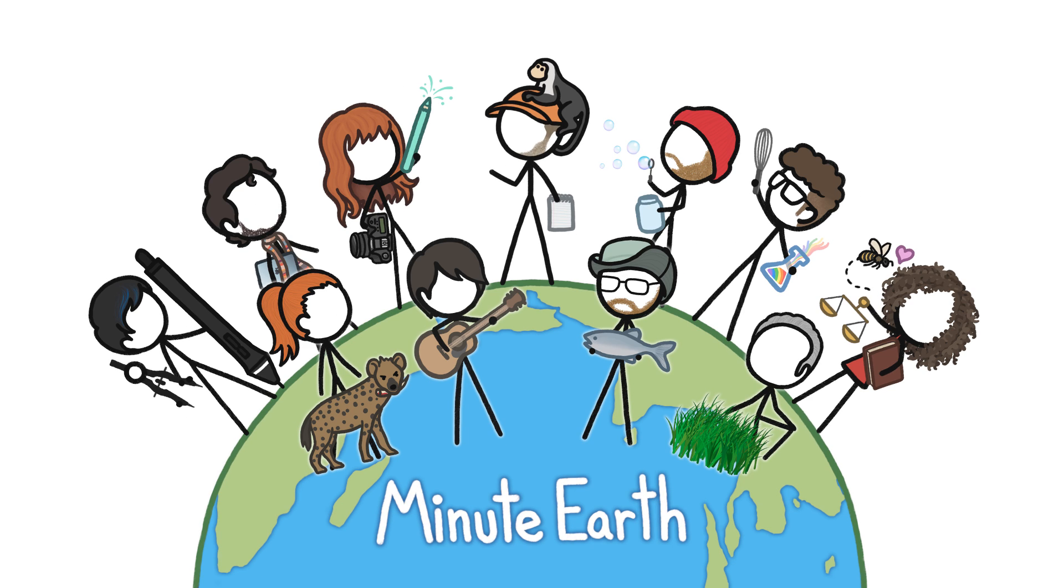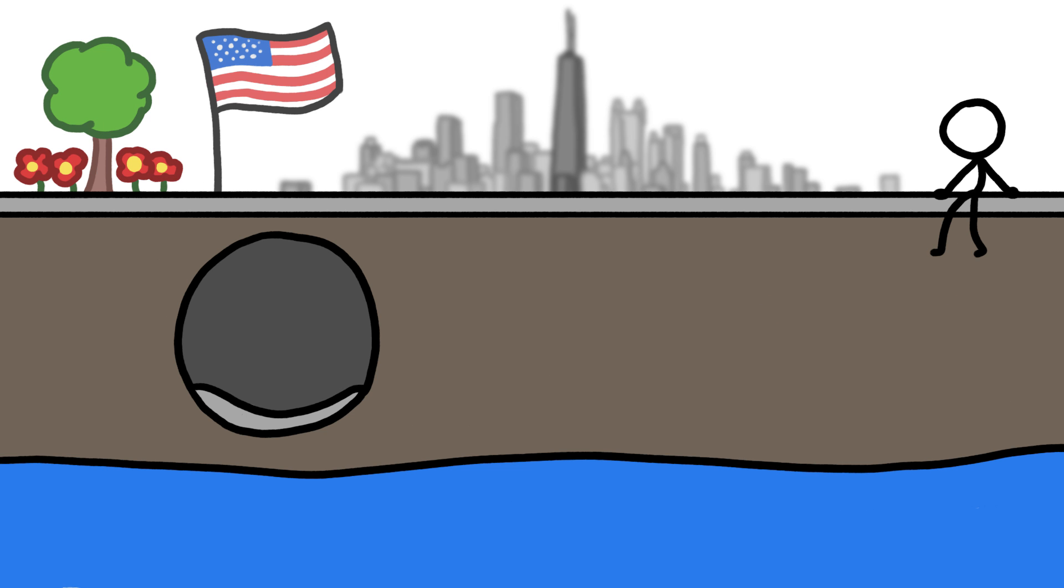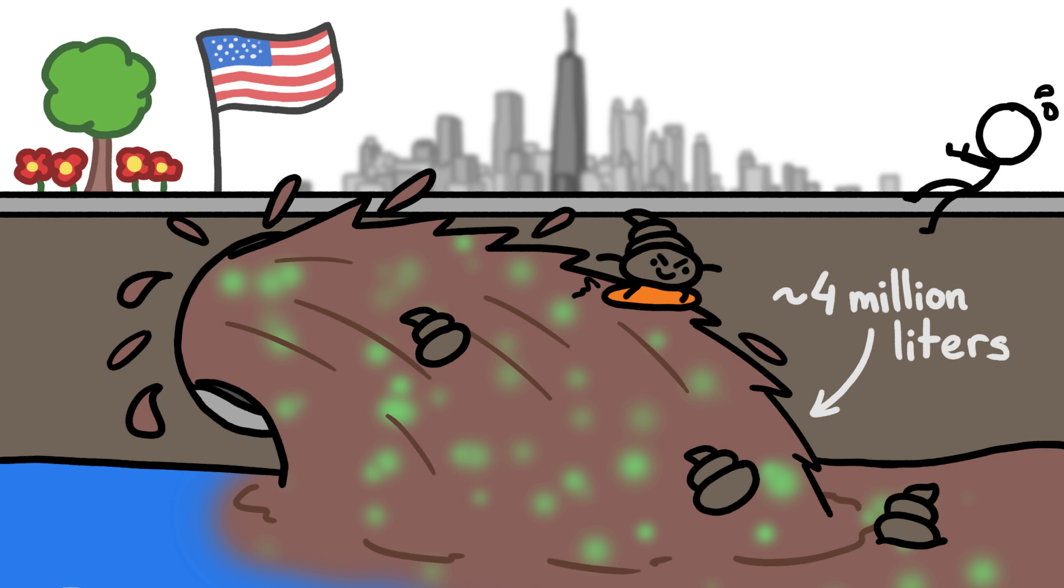Hi, this is David from MinuteEarth. In early May of 2019, the Chicago sewer system ejected over a million gallons of a slurry of poop and toxic chemicals into the Chicago River and out into Lake Michigan.